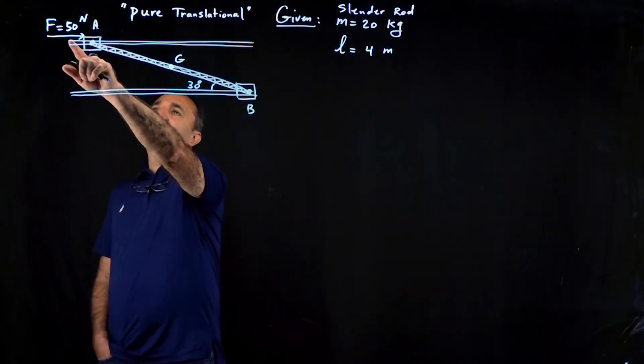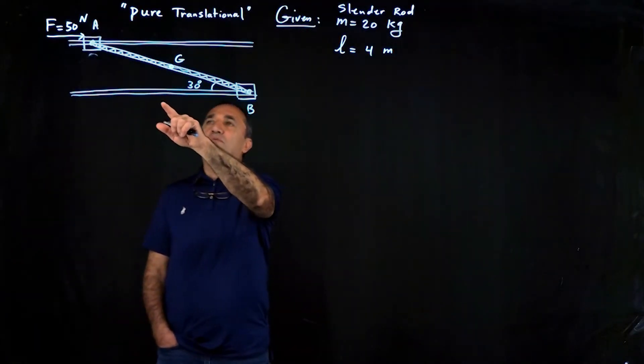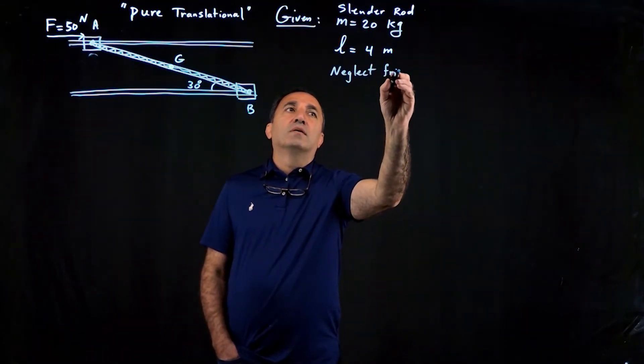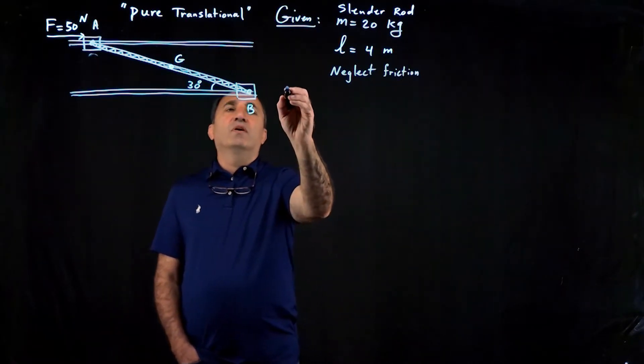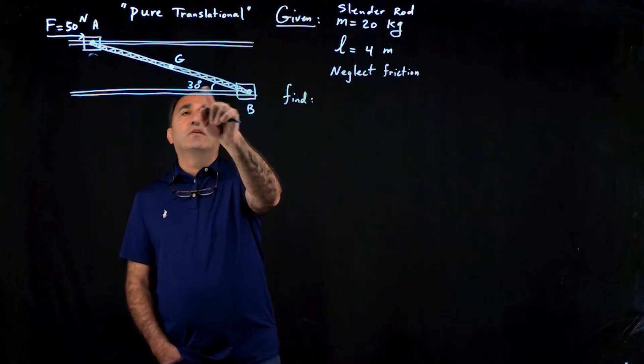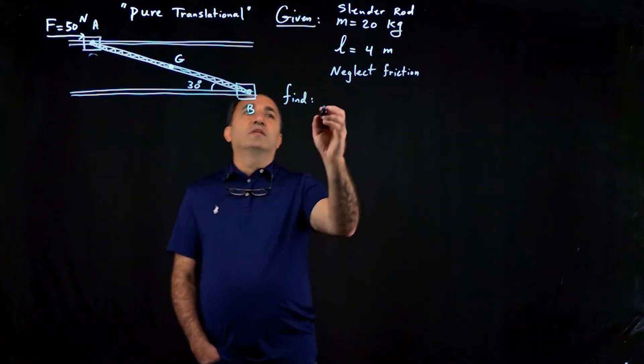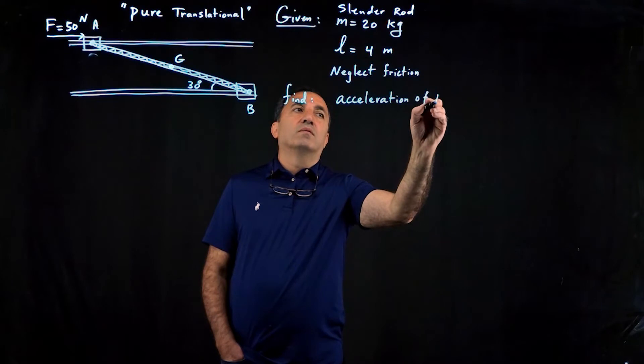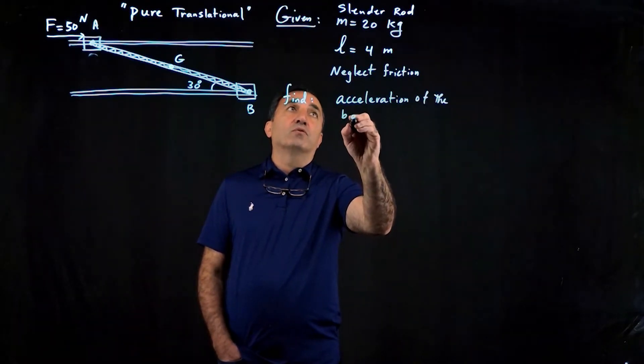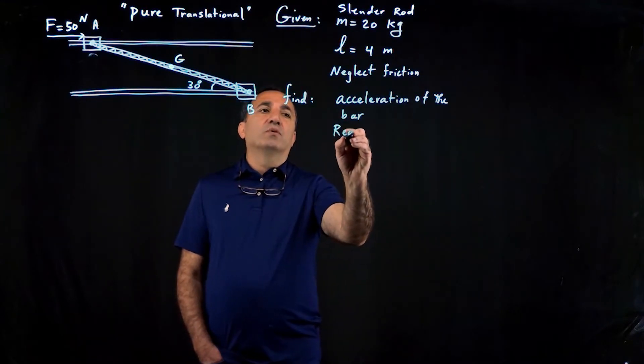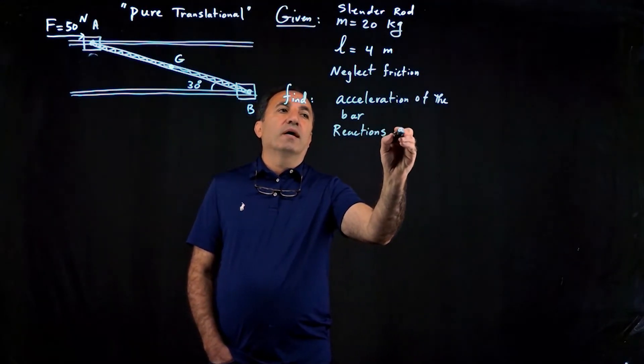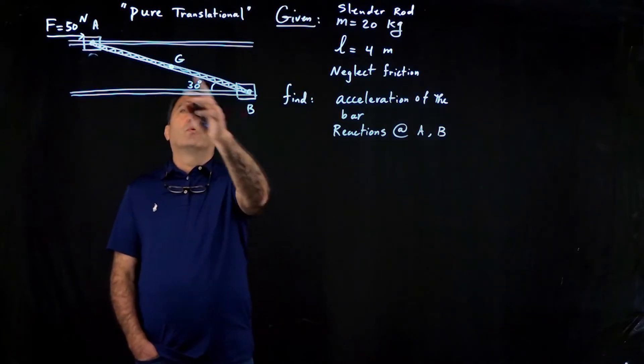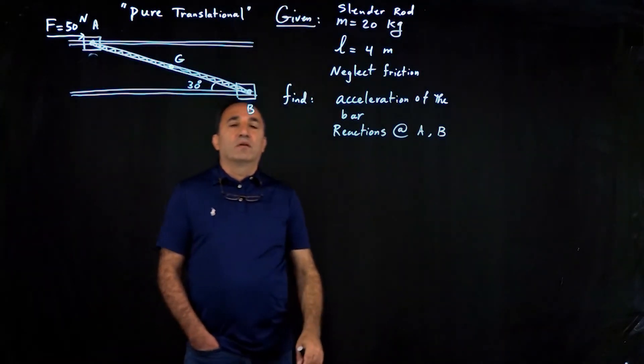And we have a force which is initiating the motion, a 50 Newton force applied at A. We're going to make this angle 30 degrees. We want to find the acceleration of the bar of the slender rod and also reactions that are developed at A and B. These would be the normal reactions exerted by these horizontal slots on collars A and B.